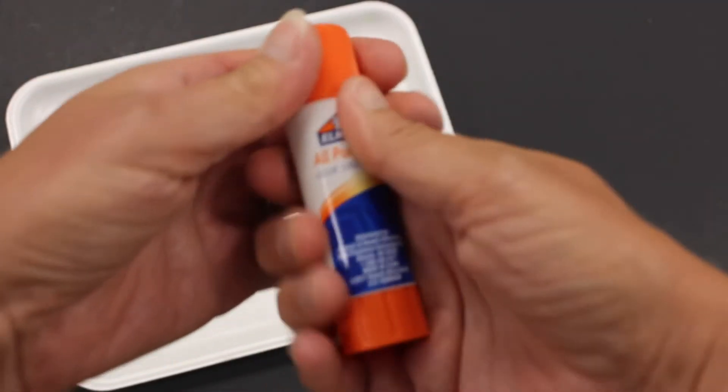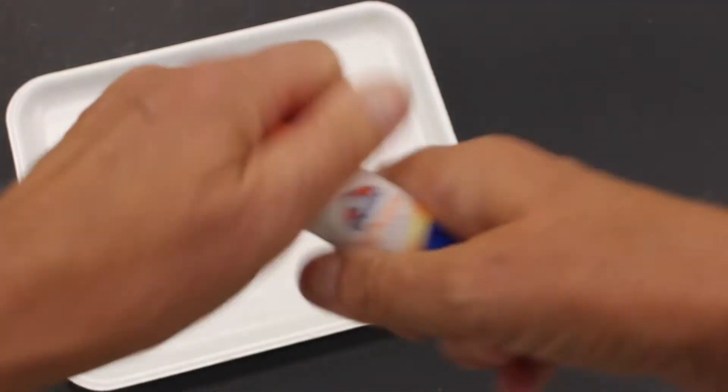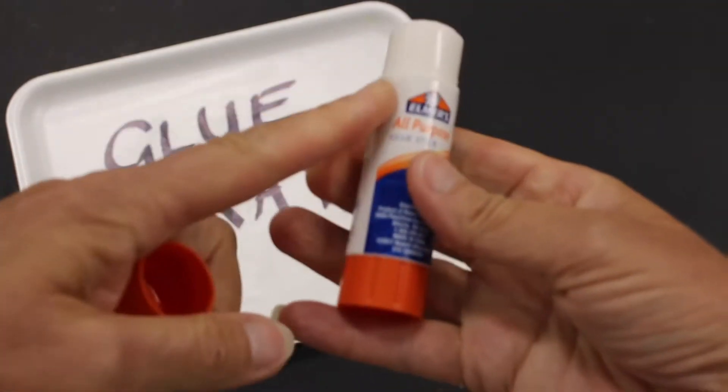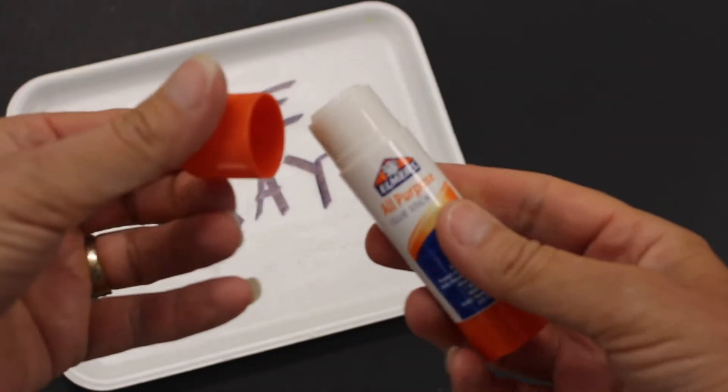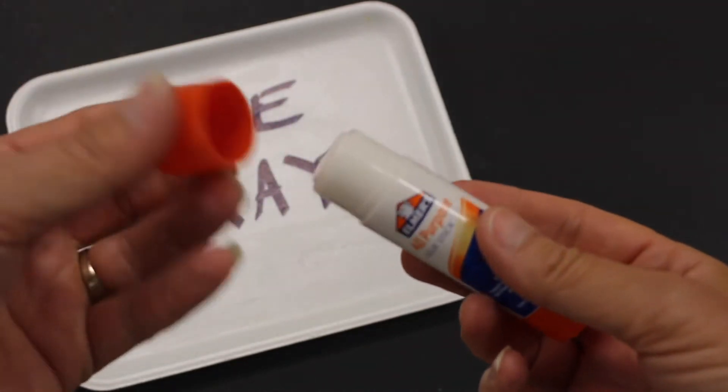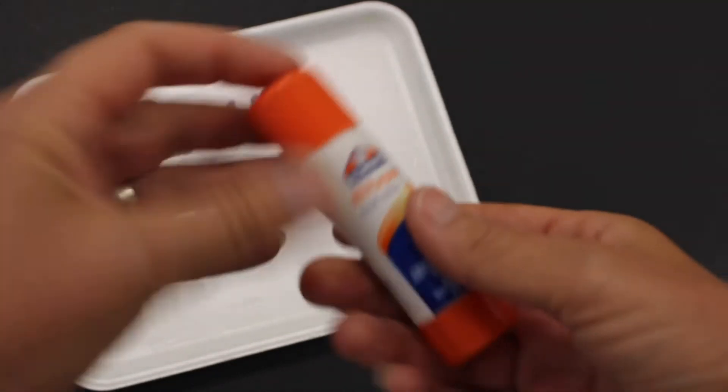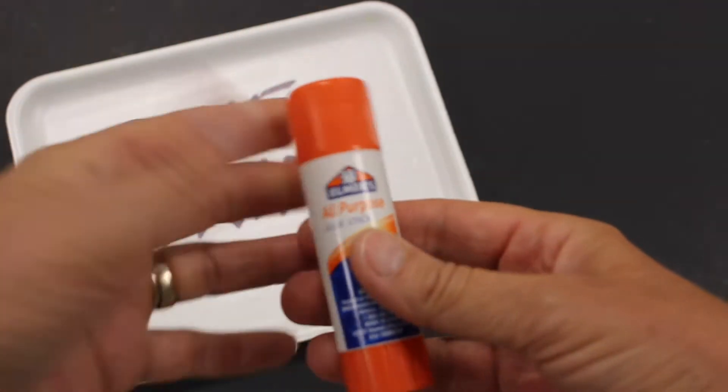But when you have one of these, you're responsible for the whole thing—that means you're responsible for the body with the glue in it and also the lid. So at the end of the lesson you need to make sure that you have that lid and you put that back on and click it shut.